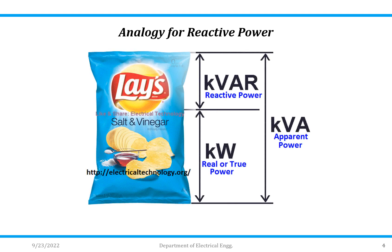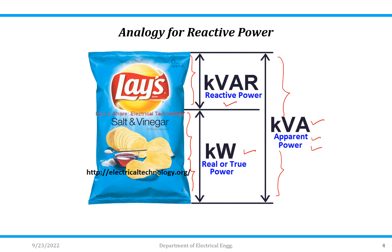The third analogy is a packet of wafers. In the packet of wafers, the actual amount of wafers we consume is nothing but real power or true power. But some preservatives are added and some amount of air has to be there within the packet. This air is not used but is required for packaging purposes and for keeping the wafers at good quality. So we are not consuming the air — it will be treated as reactive power. But we are paying for the total packet, not just the 10 or 15 wafers inside. So we are paying for total power, which is nothing but apparent power.